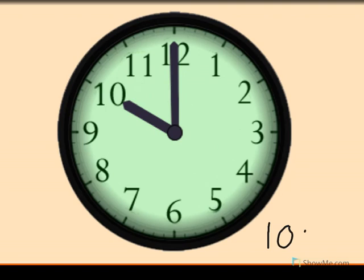10 o'clock. Show me 10 o'clock on your clock. The little hand tells the hour. The little hand is pointing to the 10. The big hand tells the minute. Big hand pointing straight up is o'clock.